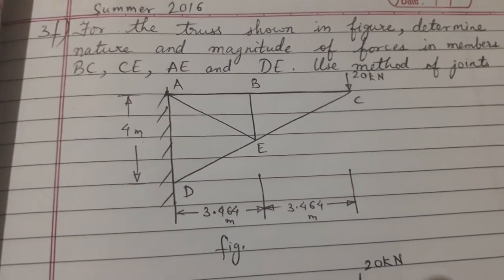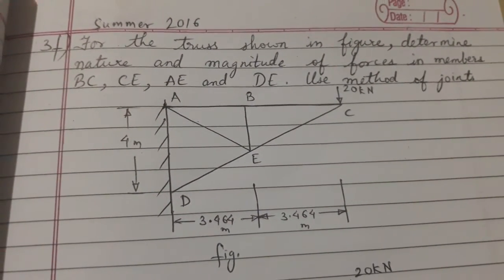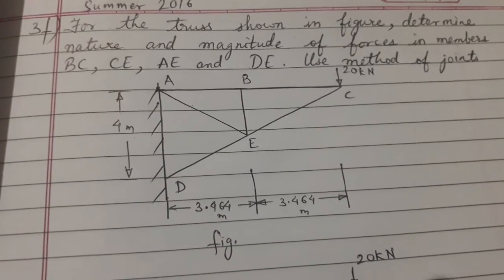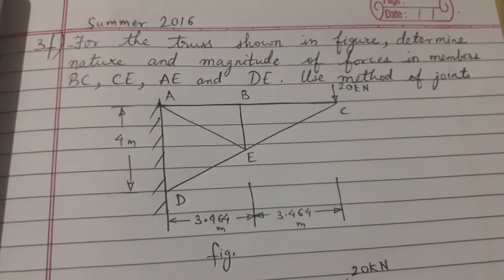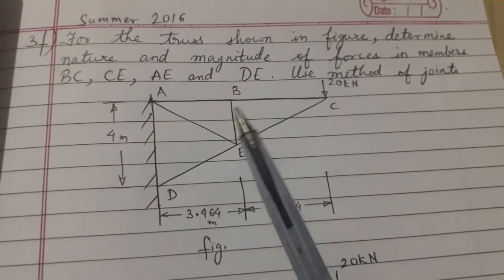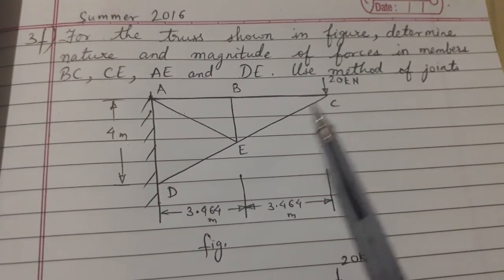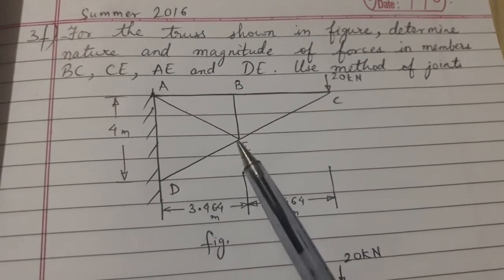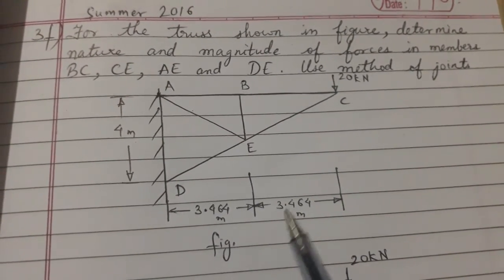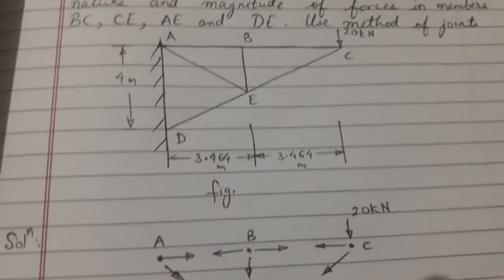Today's topic of discussion is a problem which was asked in a recent examination. For the truss shown in the figure, determine the nature and the magnitude of forces in the members BC, CE, AE, and DE with the given dimensions.